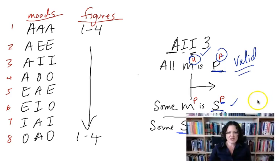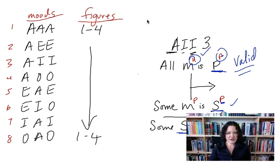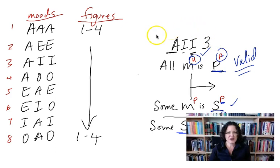Next we're going to use AII-3 to learn how to do Venn diagrams. Your homework is to go through all eight moods in figures 1 through 4 — 32 problems total. Each valid argument form has a Latin name; for example, AAA Figure 1 is always valid and is called Barbara. I don't remember the name for AII-3, but you might want to research that. Next time: Venn diagrams — it's going to be awesome.